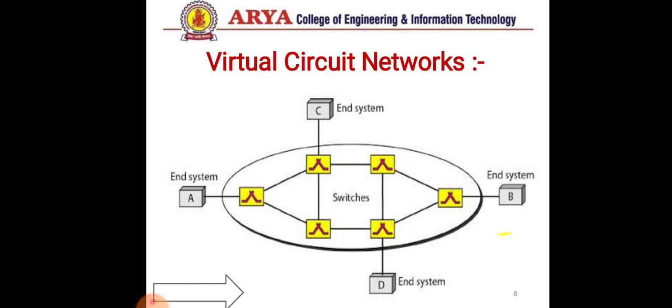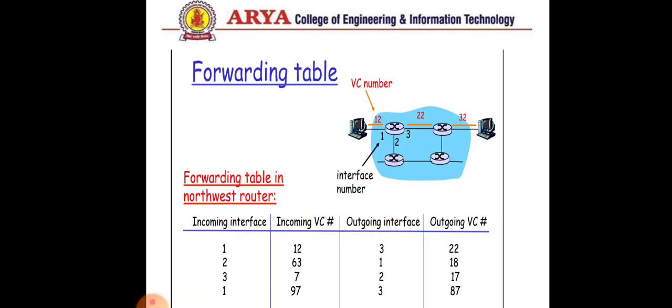This is a virtual circuit network — here is a source and here is a destination, and between them is an intermediate state containing many switches. The forwarding table between a source and a receiver is a simple table containing four parts with important information about the virtual circuit: incoming interface, incoming VC, outgoing interface, and outgoing VC.